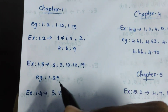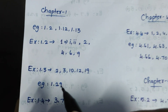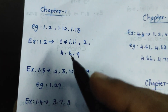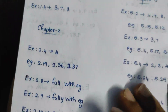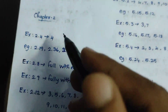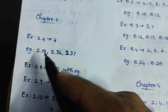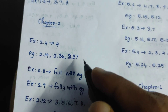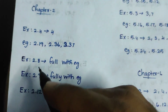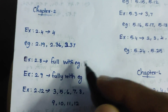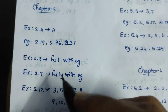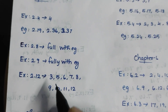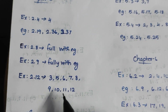This is very important. Maximum first charge. Chapter 2, Exercise 2.4, Example 2.19, 2.36, 2.37. Exercise 2.8 is full with Example. Exercise 2.9 is fully with Example. Exercise 2.12: 356, 789, 10, 11, 12.